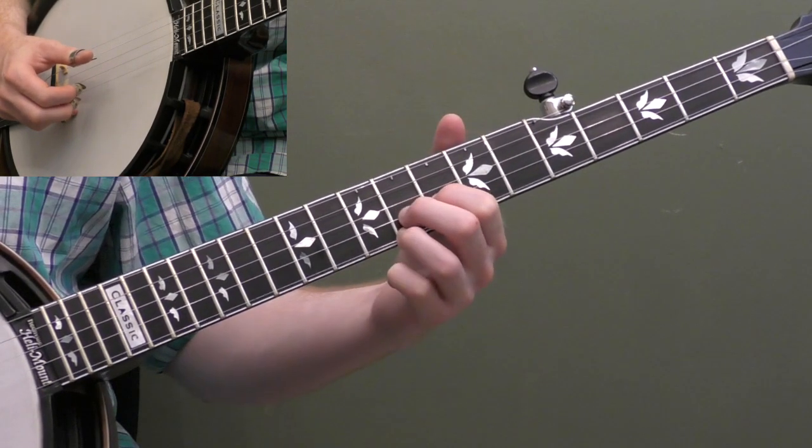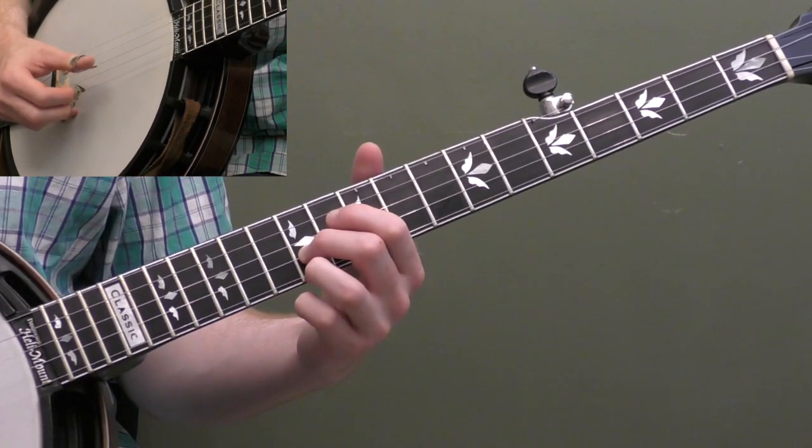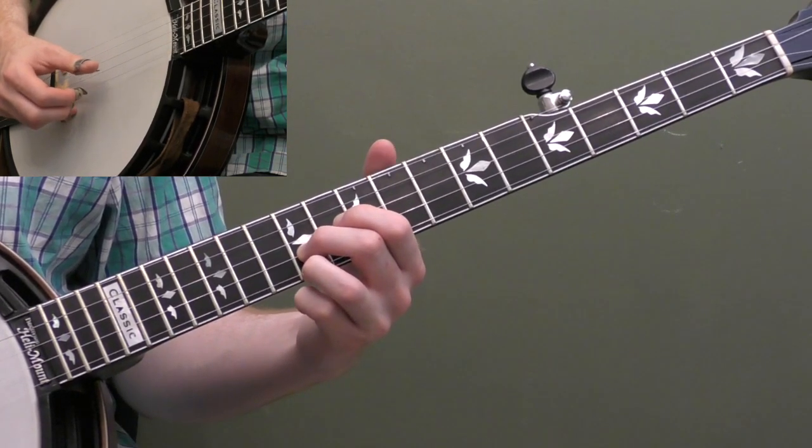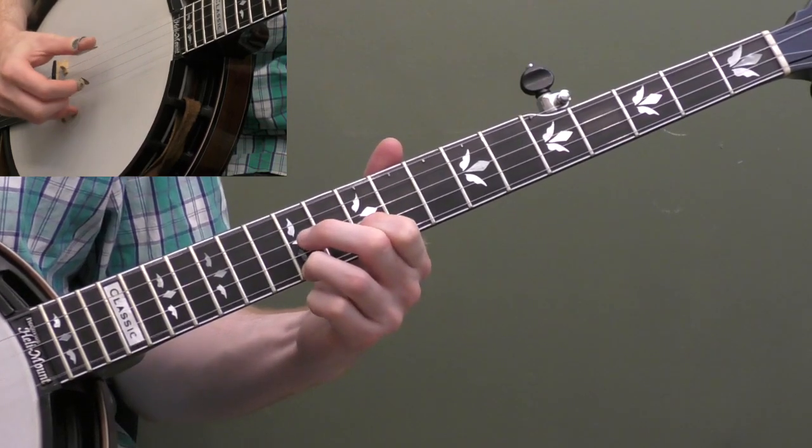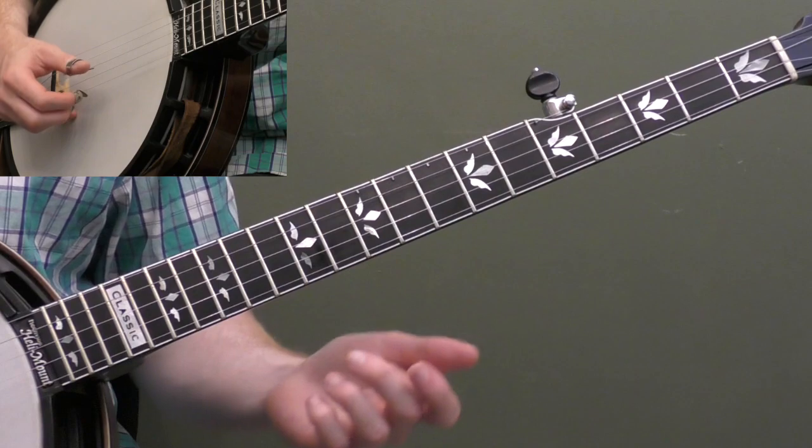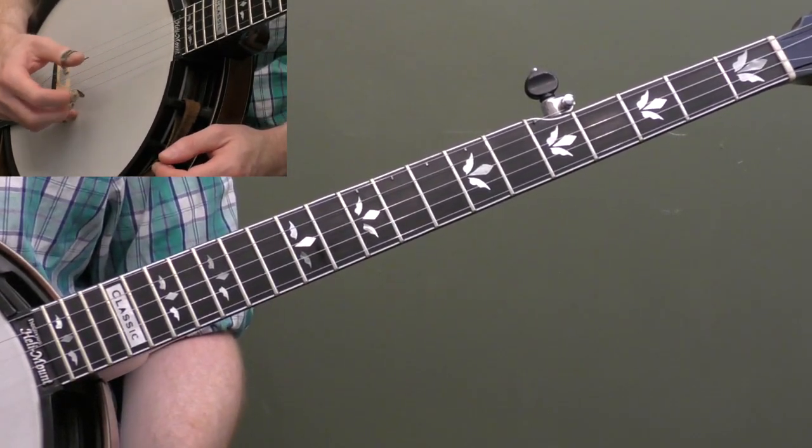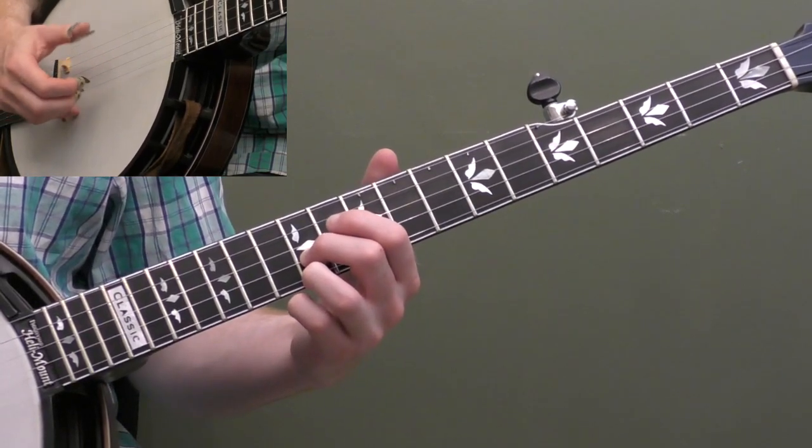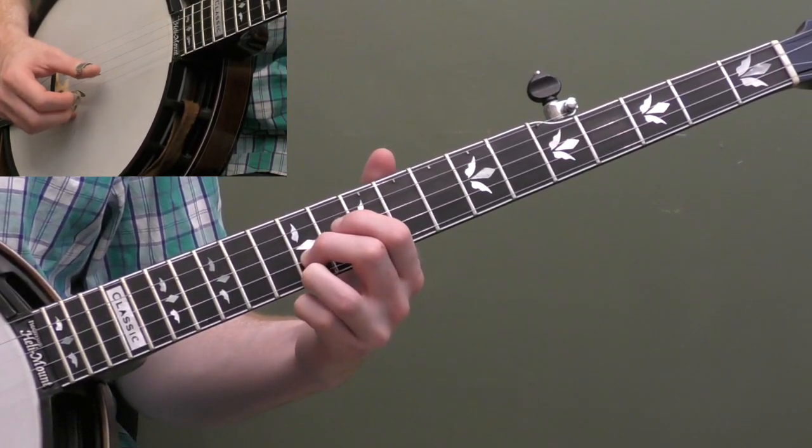So that's one time through the solo. We're using the same roll the whole time, that forward roll. The only time we're changing it is for that ending lick. Otherwise, we're using the exact same roll the entire time. The forward roll keeps the drive going, keeps that forward momentum going. We're also using our thumb to pop out the melody notes.